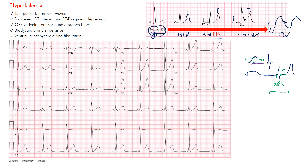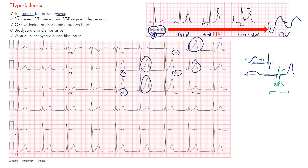To recap: tall, peaked, narrow T waves are one of the earliest EKG changes. Clinically, we monitor patients on medications that raise potassium or with poor kidney function. For example, a dialysis-dependent patient who missed a session with a potassium of 6 — we get an EKG and start seeing these early changes. Those pointed T waves are most prominent in V2, V3, V4, and V5.